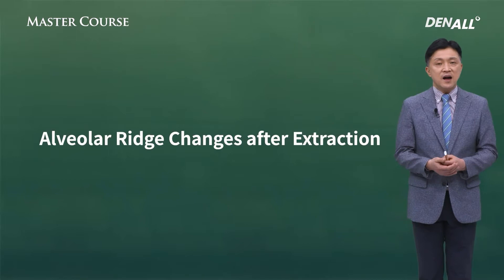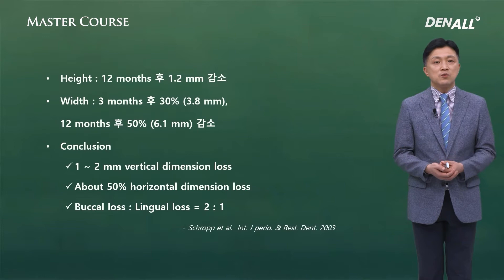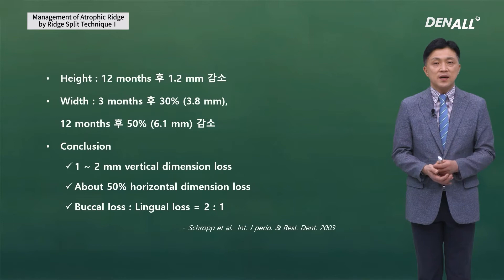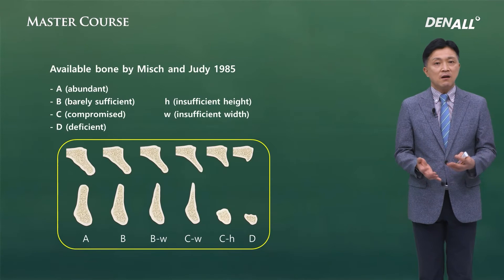The alveolar ridge changes after extraction. Resorption occurs after 12 months — the height reduces by 1.2 mm. In terms of width, three months later it reduces by 30%, and it continues to become resorbed throughout life.